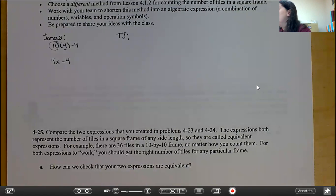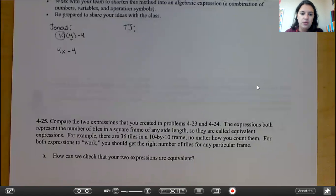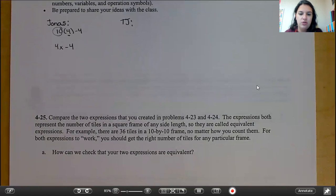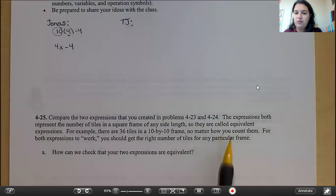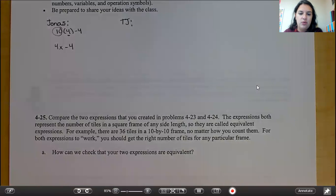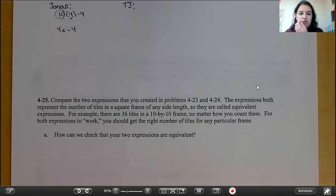Moving on to 425. 425 says compare the two expressions you created in problems 423 and 424. So we skipped 423. So I will give you the expression 423. The expressions both represent a number of tiles in a square frame of any side length. So they are called equivalent expressions. For example, there are 36 tiles in a 10 by 10 frame, no matter how you count them. For both expressions to work, you should get the right number of tiles for any particular frame.